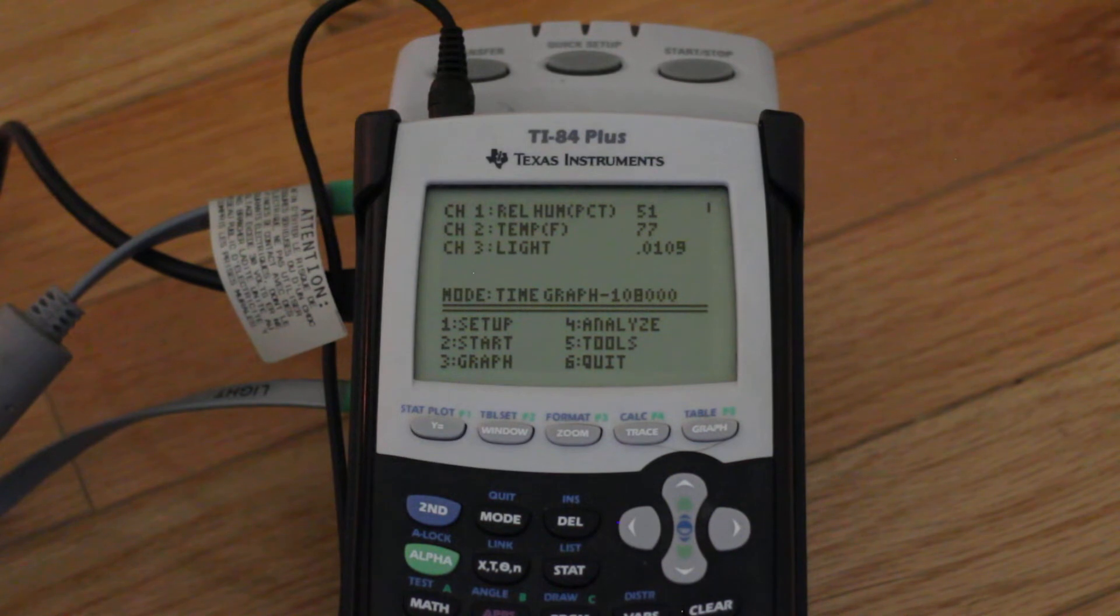But anyway, this is really inexpensive. I think it was probably $50 between the CBL and the relative humidity sensor. And I plan to collect data with this up until I build my own Arduino or ESP32 based temperature, humidity, and light Wi-Fi based sensor.